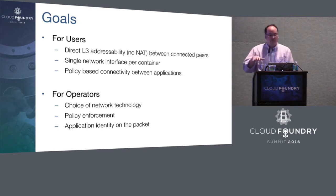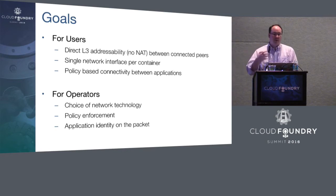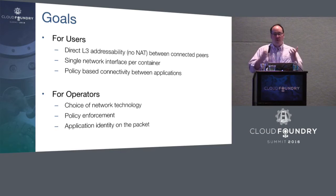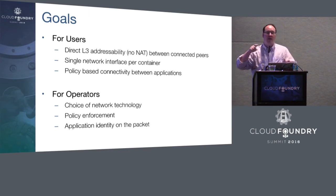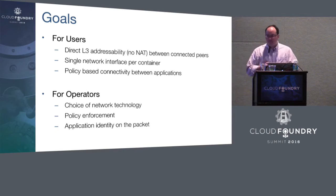In terms of the container networking project in general, we have a small set of goals we're looking to get to. For users, we want to deliver a solution that allows direct layer three addressability without NAT between all connected peers. What that means explicitly is that if you have two instances, two containers, of the same application or other applications, you can uniquely address them and send requests to them without having to go through the entire routing tier. So when you receive a request, you know explicitly who it's from in terms of the address — you have some notion of the source, some notion of who you're talking to.